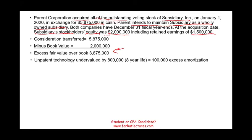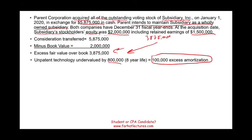We have an unpatented technology on the books that is undervalued by $800,000. Of this $3,875,000 excess, we know $800,000 goes to that unpatented technology. But remember, once we add this technology and do the consolidation, we're going to have to amortize it — $100,000 expense and $100,000 of amortization — because we added assets, and assets get expensed. So this is why we have a $100,000 excess amortization.